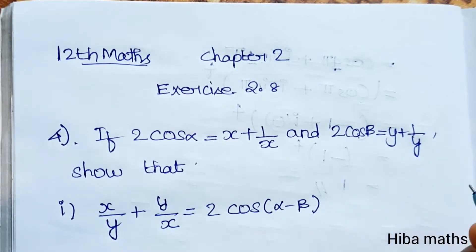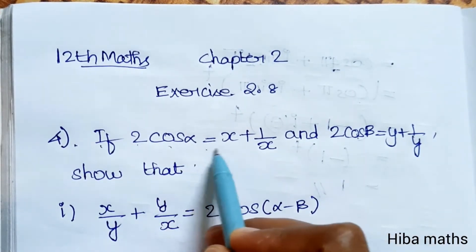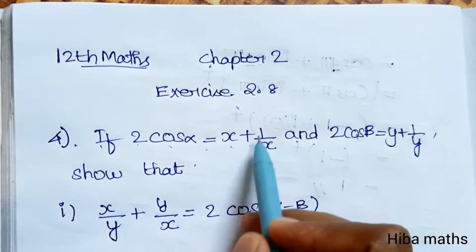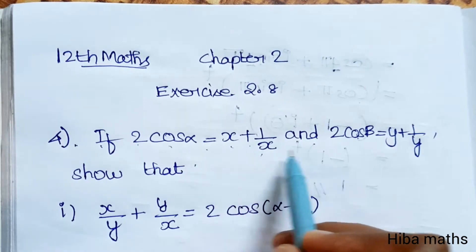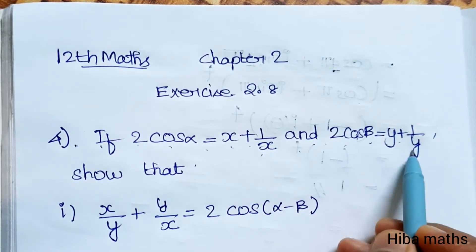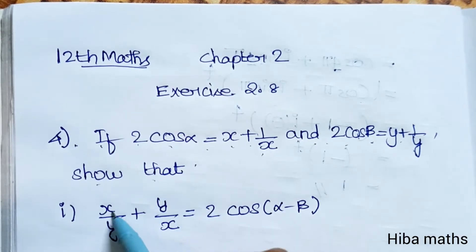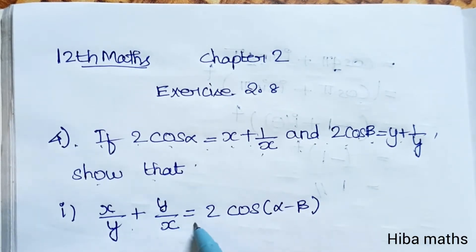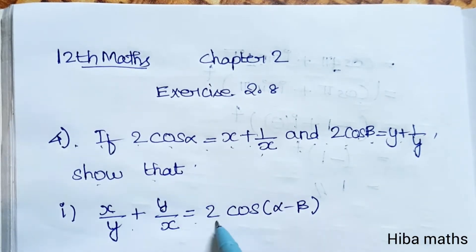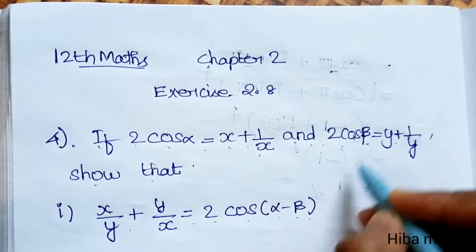If 2 cos alpha is equal to x plus 1 by x, and 2 cos beta is equal to y plus 1 by y, then show that x by y plus y by x is equal to 2 cos(alpha minus beta).